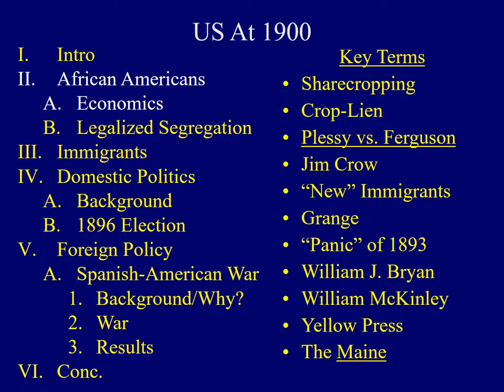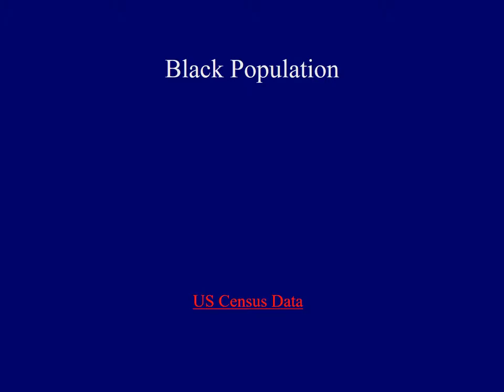We will begin the core of this lecture by investigating the economic situation faced by many African Americans during this era. A good place to begin is with some statistics addressing the black population of the United States. In 1900, almost 9 million African Americans lived in the nation, and an overwhelming majority of those lived in the American South.